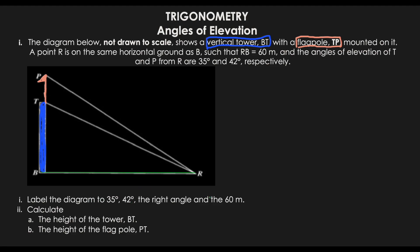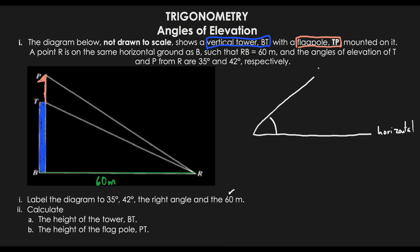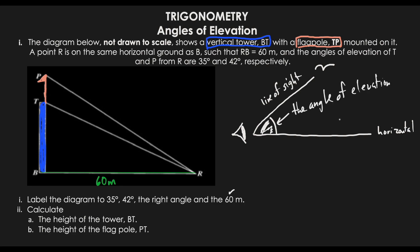We need to label the diagram to show 35 degrees, 42 degrees, the right angle, and 60 meters. The 60 meters represents the ground distance BR. Now, angles of elevation always come from the horizontal — a line running from left to right. When we view our line of sight going upward from the horizontal, we call that the angle of elevation. For example, if someone looks up at a board, the angle from the horizontal up to their line of sight is the angle of elevation.